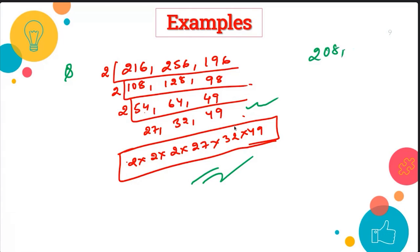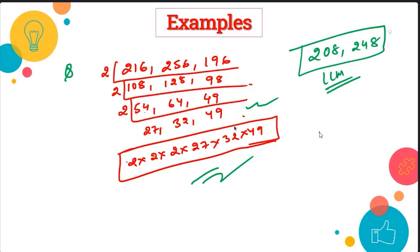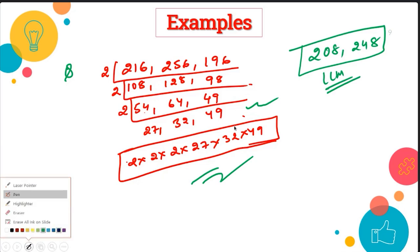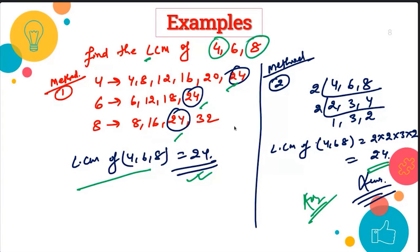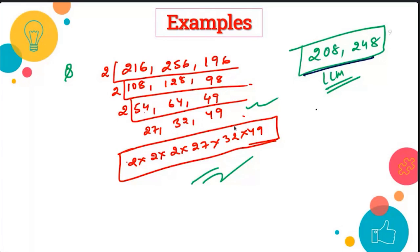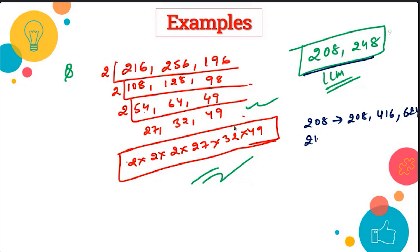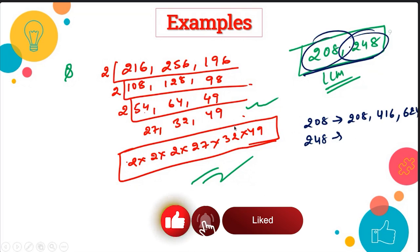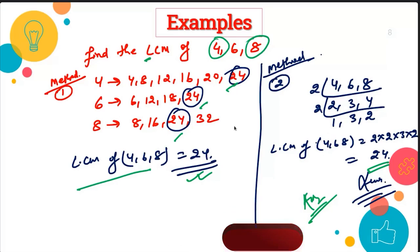Now solve this: find the LCM of 208 and 248. If you use the multiple listing method, it will take a lot of time because these numbers are so big — you would have to write 208, 416, 624, and so on. Writing all those multiples is time consuming. So for large numbers, you can't use the multiple method. That is the reason we have a second method called the division method.